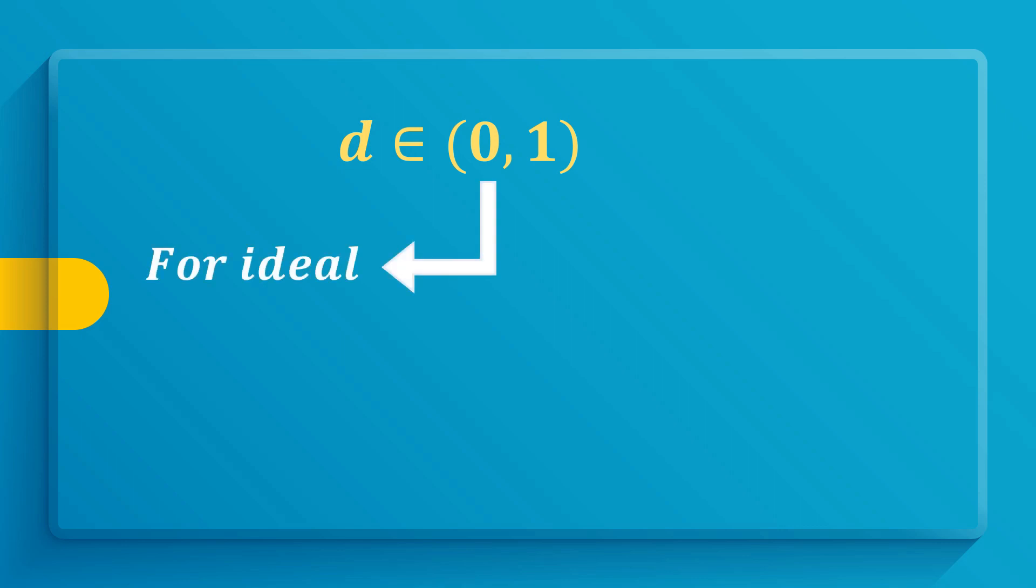But for ideal modulation, d equals 0, and that means bandwidth equals r. While for worse modulation, d equals 1 and the bandwidth equals 2r.